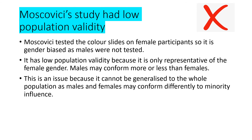Finally, Moscovici's study had low population validity. Moscovici tested the colour slides on female participants only - he didn't use males, which is straight away a limitation. So it is gender biased as males were not tested, and it therefore has low population validity because it's only representative of the female gender. Males may conform more or less than females - we don't know. So this is an issue because it can't be generalised to the whole population as males and females may conform differently to minority influence.